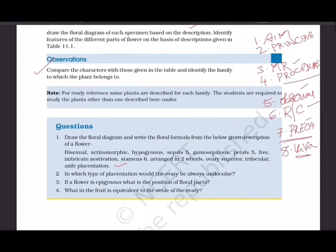Other likely viva questions: In which type of placentation would the ovary be always unilocular? What does unilocular mean? If a flower is epigynous, what is the position of floral parts? What is the fruit? What in the fruit is equivalent to the ovule of the ovary? These questions help the examiner ascertain that you understand what you're doing.